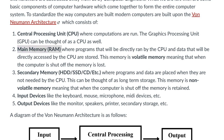Main memory, also known as RAM, is where the programs that will be directly run by the CPU and the data that will be directly accessed by the CPU is stored. This memory is volatile memory, meaning that whenever the computer is shut off — whether the power is unplugged, there is a power outage, or the computer randomly shuts down — the memory in RAM will be lost.